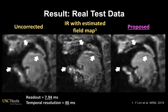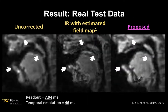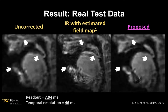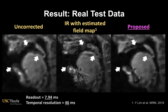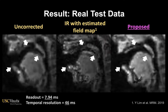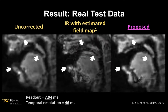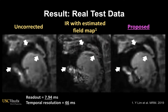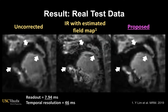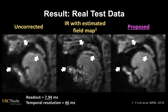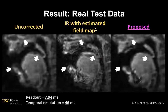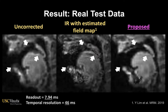We then applied the existing and proposed methods to real test data, where the blurring is much more severe but the ground truth field map is not available. The proposed method still provides improved delineation of the boundary, whereas the previous method does not.